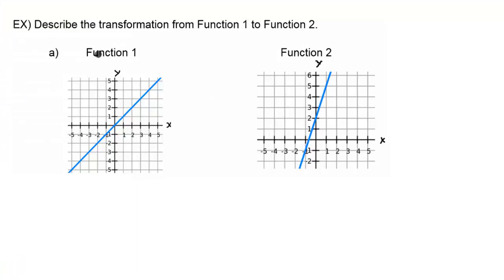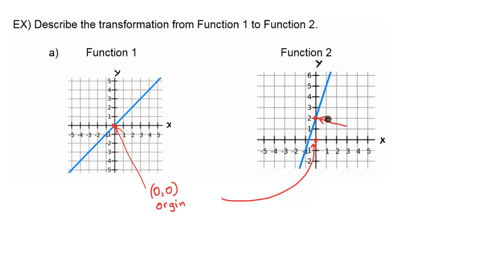Now back to part A — we have function 1, which is the parent function, and function 2, which is what changed. From function 1, you can see that the line is no longer going through the origin at (0, 0). In function 2, now it's going through the y-value of 2, so that's going to be the new y-intercept. Back to function 1, the slope would go up 1 and then over 1, so that slope is going to be 1 over 1.